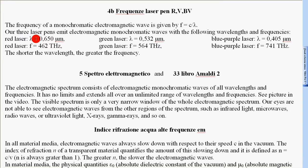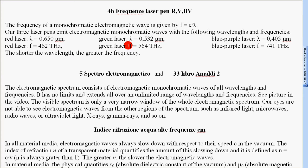wavelength equal to 0.650 micrometers and frequency equal to 462 Terahertz. Green laser: wavelength equal to 0.532 micrometers and frequency equal to 564 Terahertz. Blue-purple laser: wavelength equal to 0.405 micrometers.